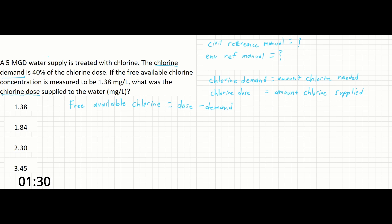So the volume of the water supply is not going to be needed for this problem, so let's just get rid of that now. We can see here that the chlorine demand is given as 40% of the dose. So we can say that we have the dose minus 40% of the dose. And the free available chlorine is measured to be 1.38 milligrams per liter.